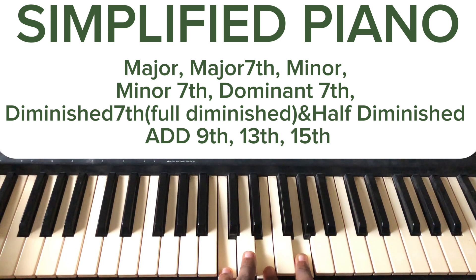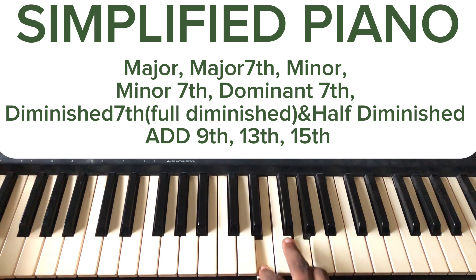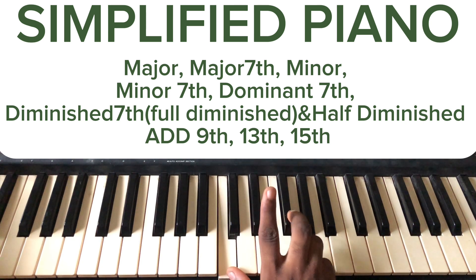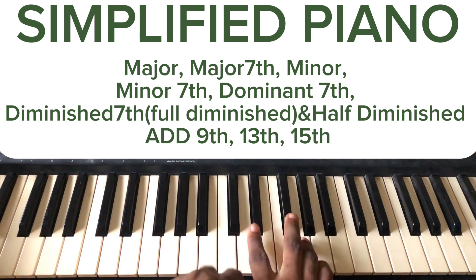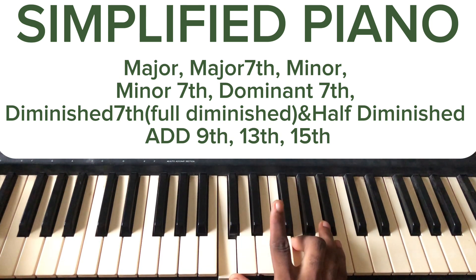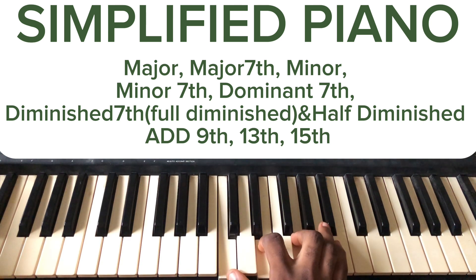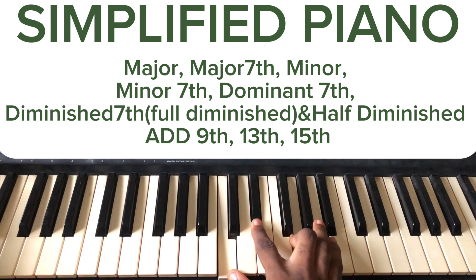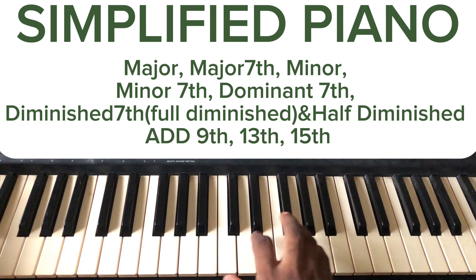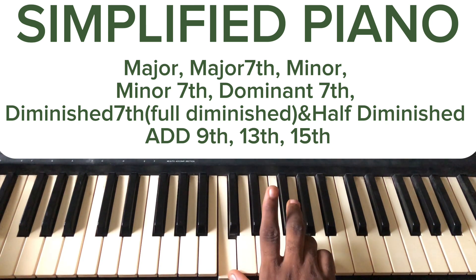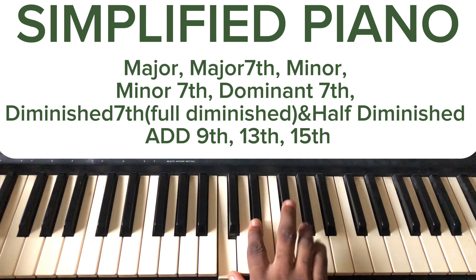How do we form a minor? We now know a major as one, three, five. A minor is formed with one, flat three, and five. So this becomes C minor. This is C major — when I move a semitone backwards, the third degree becomes flat and it becomes a minor. When I flat the third, it becomes a minor triad.